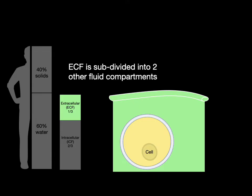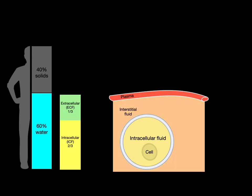Now, the extracellular fluid is further subdivided into two other fluid compartments. Plasma, which is the fluid found inside of our vessels, that's about a quarter of that extracellular fluid. And then the interstitial fluid is three-quarters of all that extracellular fluid. So plasma and interstitial fluid make up the extracellular fluid.